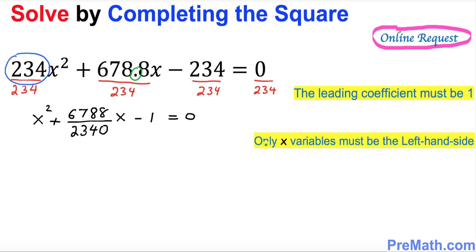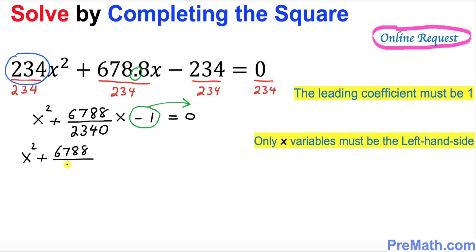The next step: we want to make sure that only x variables are on the left-hand side. That means this negative 1 must go to the other side, so we can write: x squared plus 6788 divided by 2340, times x, equals positive 1.